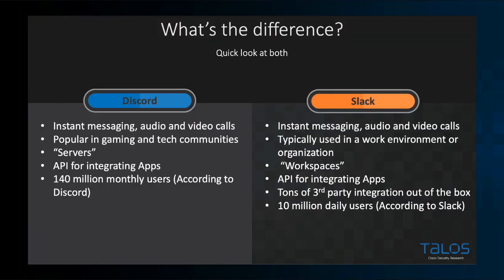Before we go further, I want to cover a couple of differences and similarities between Discord and Slack. The main similarity is that they're both instant messaging applications with audio and video calls — functionally very similar. The main difference is they're geared towards different demographics. Discord is geared towards gaming and tech communities; a lot of people in InfoSec have moved to Discord rather than IRC. Slack is more geared towards a professional demographic — a lot of developers use Slack and it's used in many work environments.